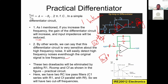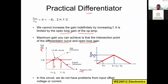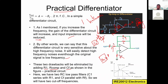These two drawbacks can be eliminated by adding additional components — specifically R1 and C_f — giving us the practical differentiator circuit. This circuit contains two RC low-pass filters: one RC pair connected in series and another connected in parallel. That is why the practical differentiator has two cutoff frequencies.